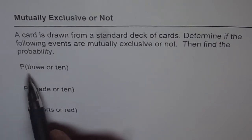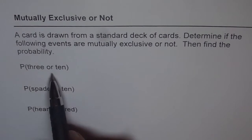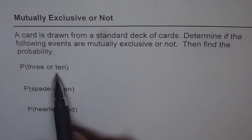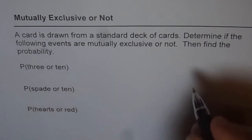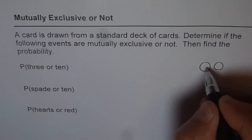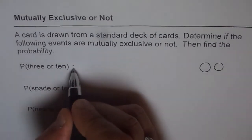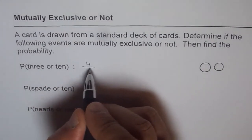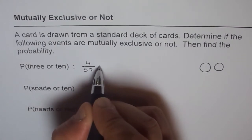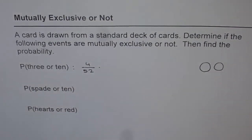The first one is probability of getting a three or ten. You can get either three or ten, so there is no overlap at all — this is mutually exclusive. How many threes are there in a deck of cards? There are four threes, so it is four out of 52.